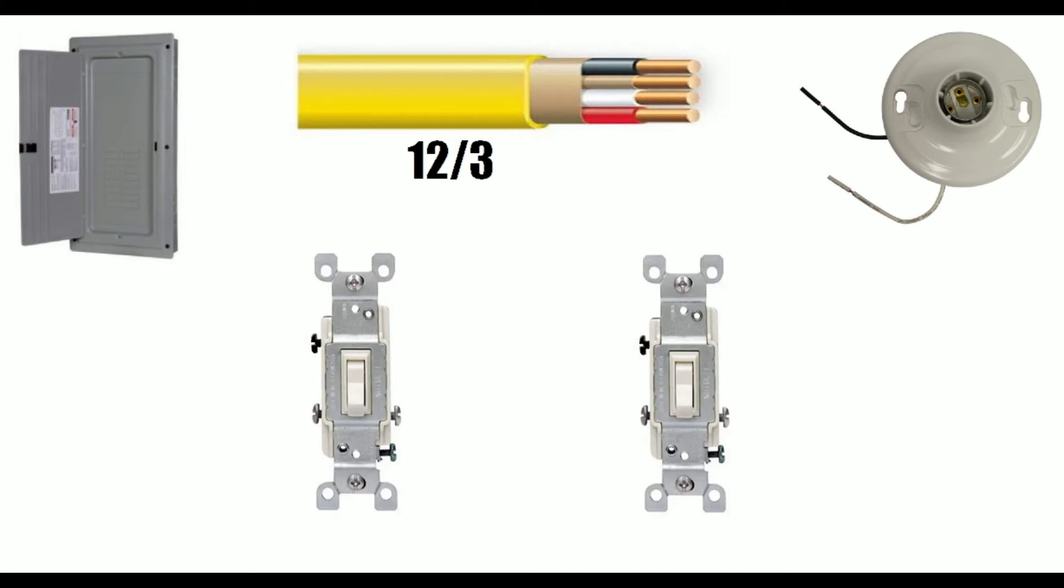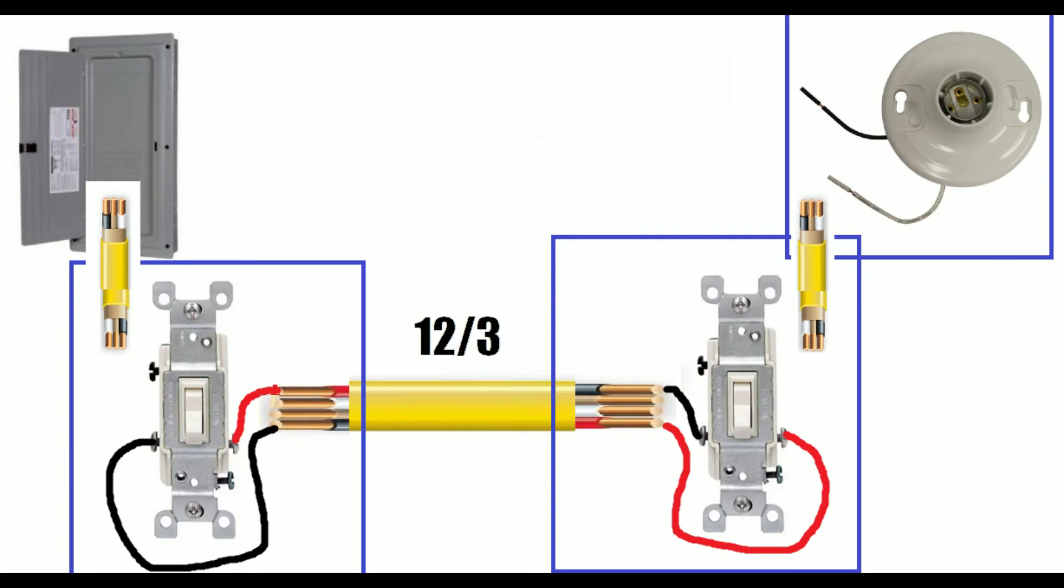Now, you don't have to use 12-3. You can use two sets of 12-2, but this is the simplest way to show you in a diagram. The two screws on your switch that are not black are called your travelers. You're simply going to connect them to each other with the black and red of your 12-3.